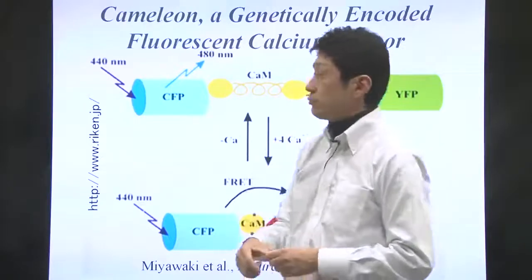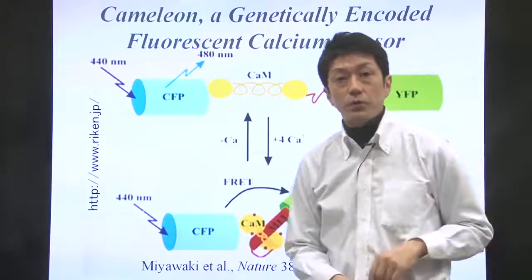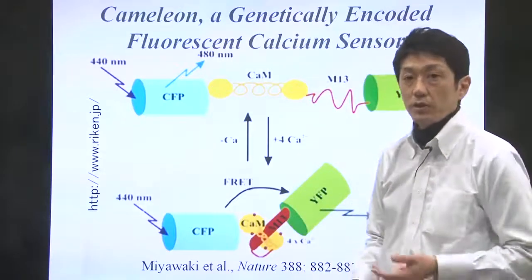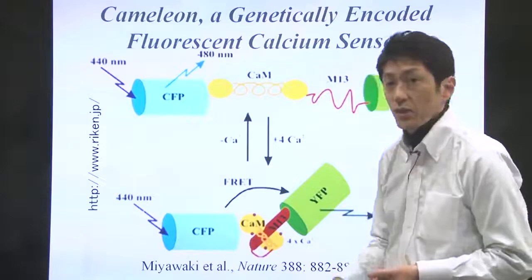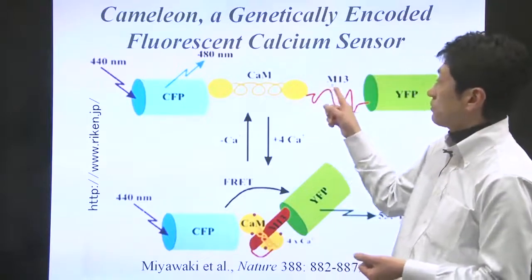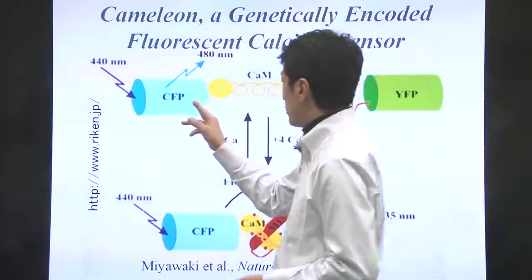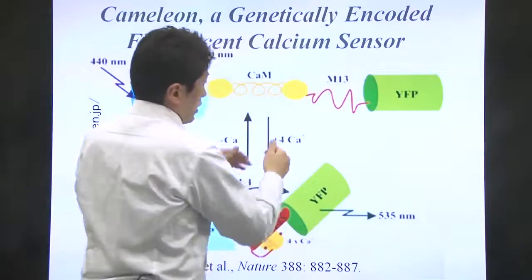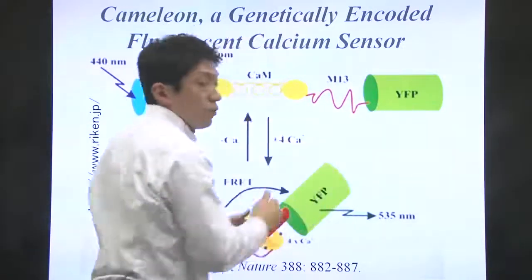The chameleon is a fusion protein of two fluorescent proteins, calmodulin, and the calmodulin binding domain of myosin light chain kinase called M13. You see four different proteins: CFP, calmodulin, M13 peptide, and YFP.